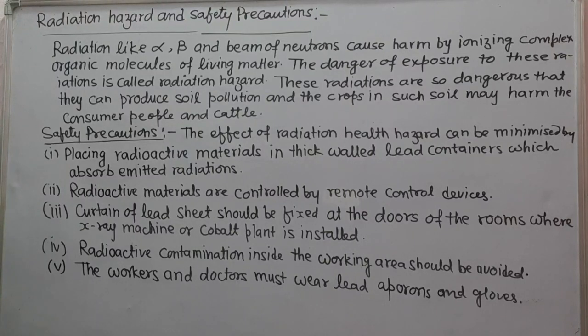Radiation hazard and safety precautions. Radiations like alpha, beta, and the beam of neutrons cause harm by ionizing complex organic molecules of living matter. The danger of exposure to these radiations is called radiation hazard. These radiations are so dangerous that they can produce soil pollution and the crops in such soil may harm the consumer people and cattle.